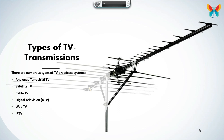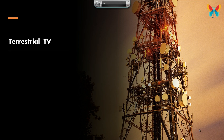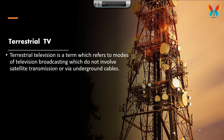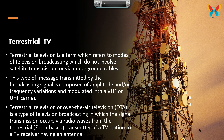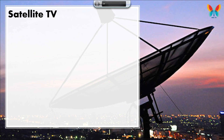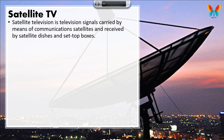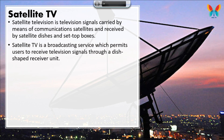Terrestrial television refers to modes of television broadcasting which do not involve satellite transmission or underground cables. The signal is composed of amplitude and/or frequency variations and modulated into a VHF or UHF carrier. Terrestrial television, or over-the-air television (OTA), transmits signals via radio waves from a terrestrial, earth-based transmitter of a TV station to a TV receiver having an antenna.